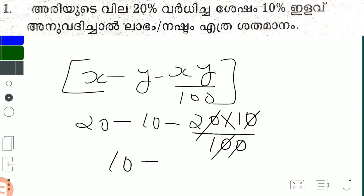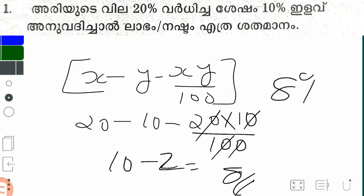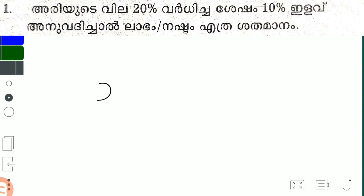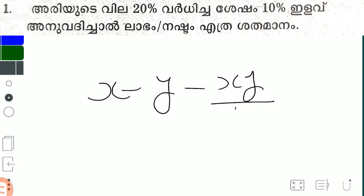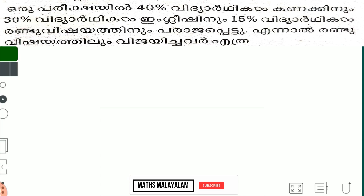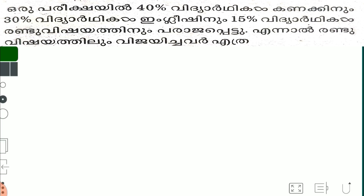1 minus 2 is equal to 8. Positive number is equal to 8. x minus y minus xy by 3. Joint list will be made of 1 minus xy by 14.